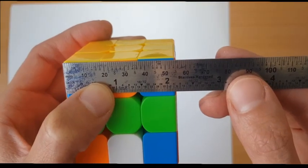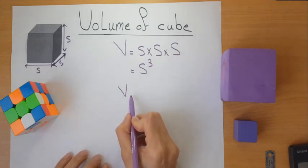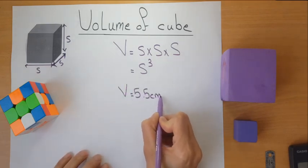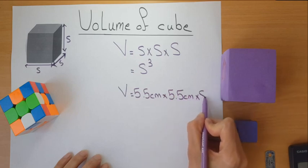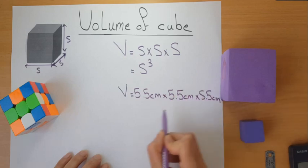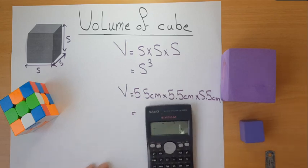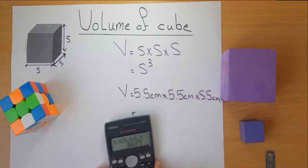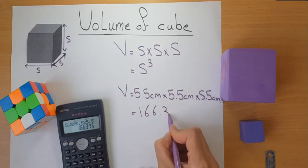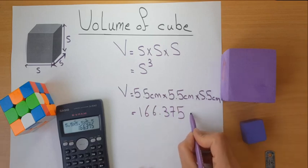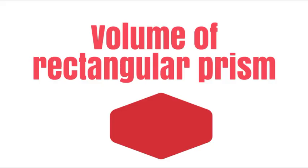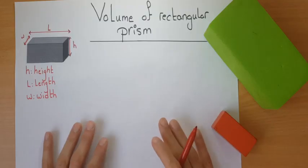Let's measure the volume of this cube. The volume is 5.5 centimeters times 5.5 centimeters times 5.5 centimeters. We can directly cube it on the calculator, so the answer is 166.375 centimeters cubed.